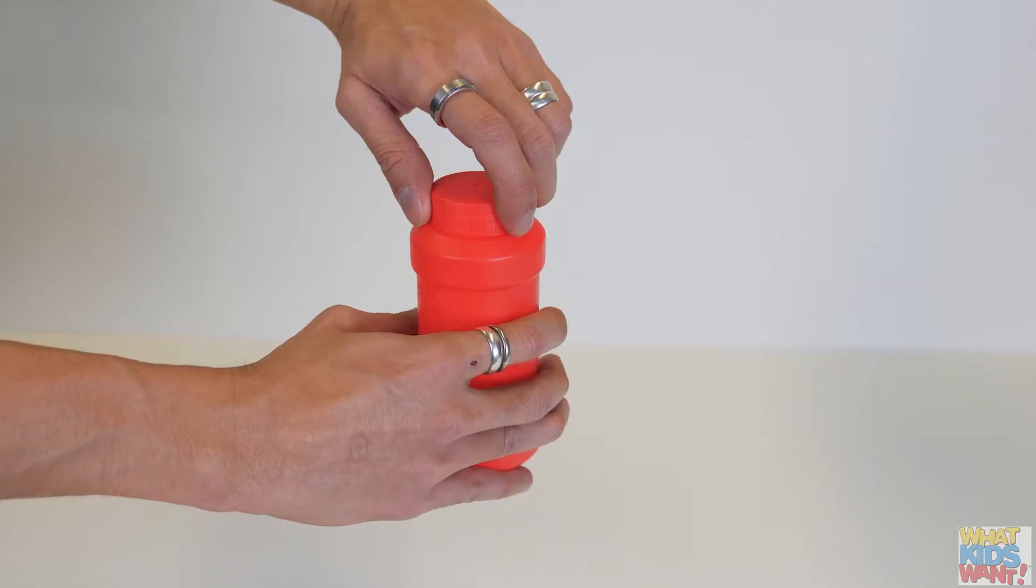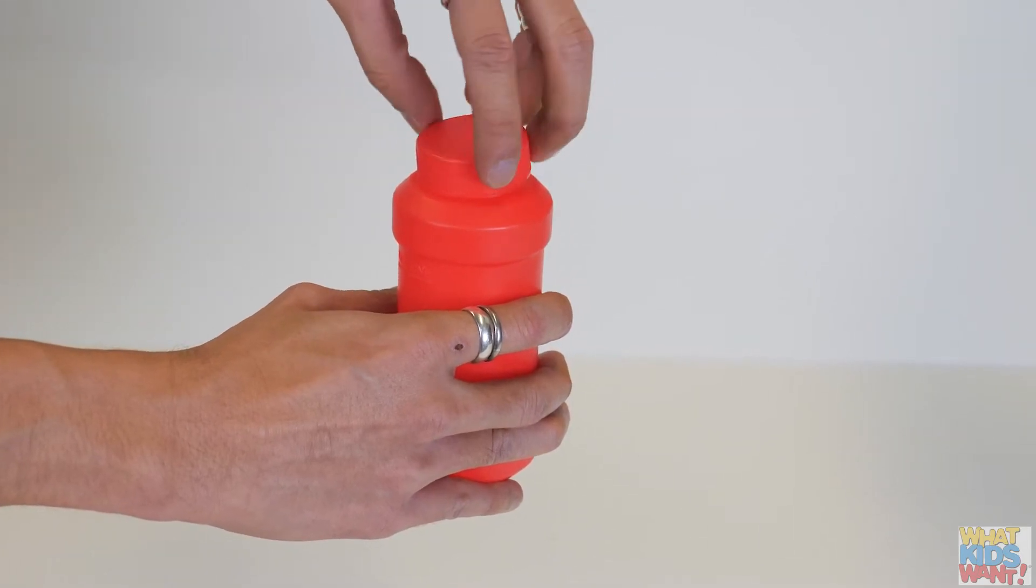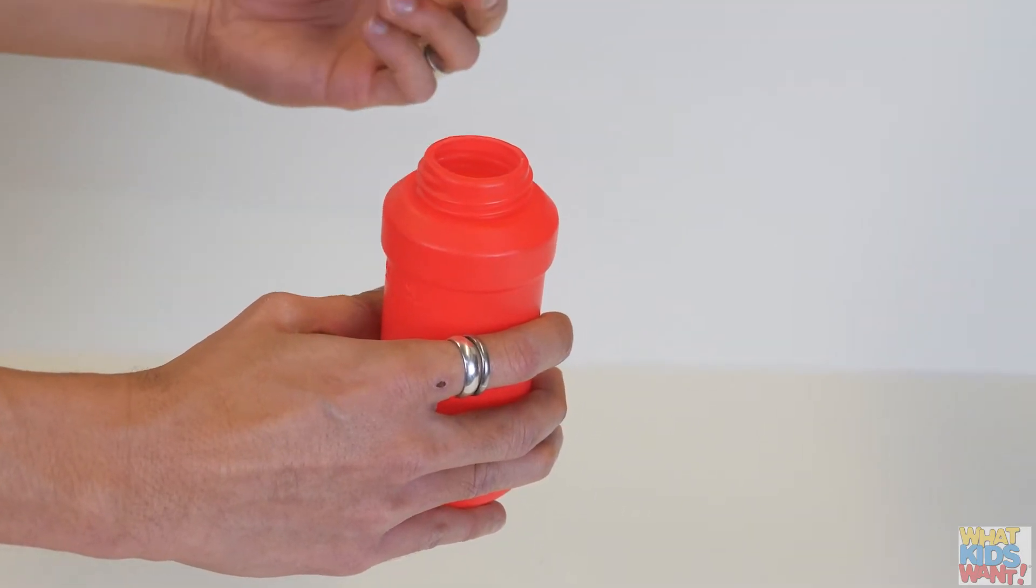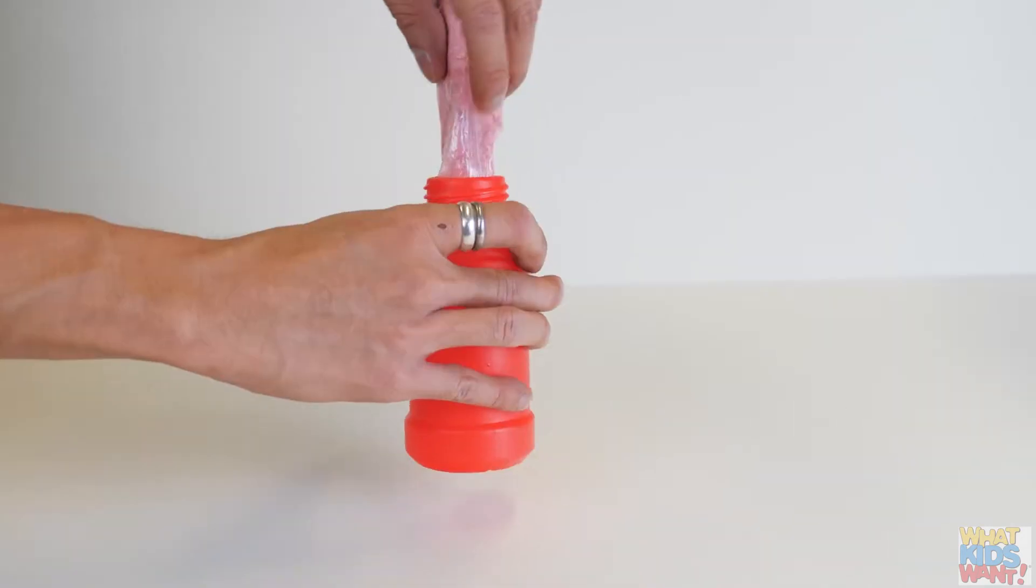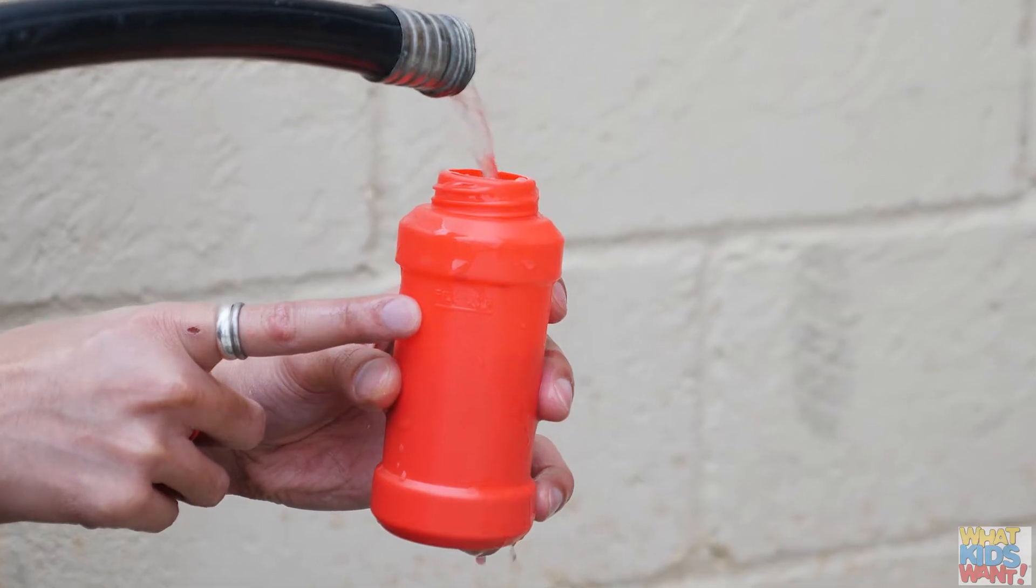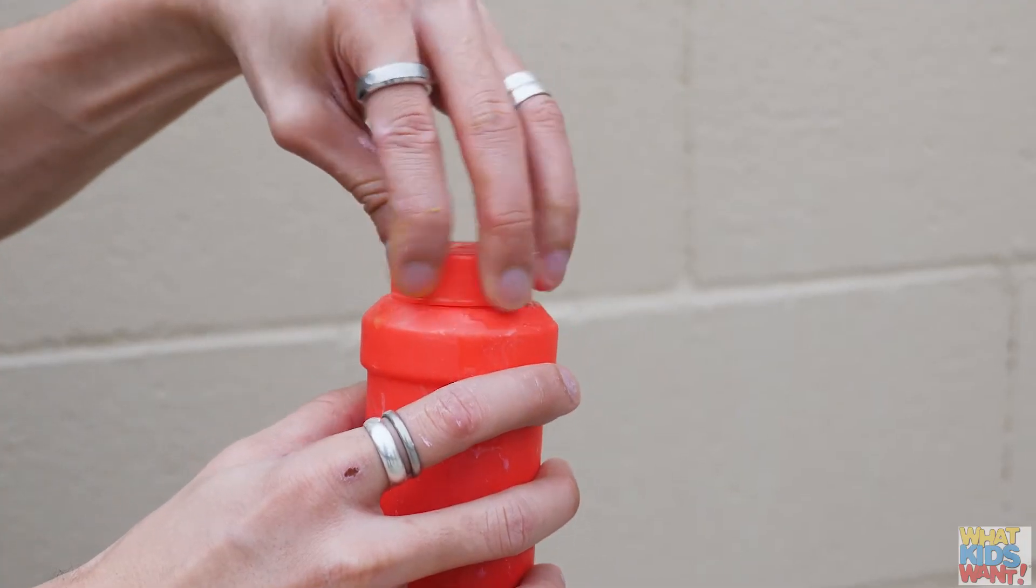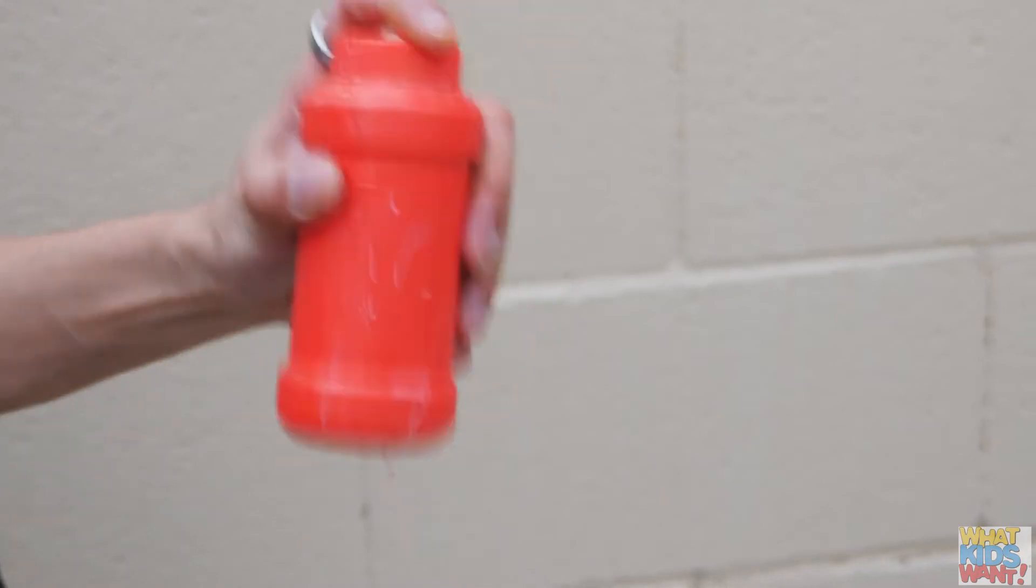Let's get started by preparing the chalk paint powder for use. Unscrew the cap from the bottles, open the bag of chalk powder inside each bottle and pour the powder back into the bottle. Add water up to the indicated fill line on each bottle. Replace the cap and shake well.